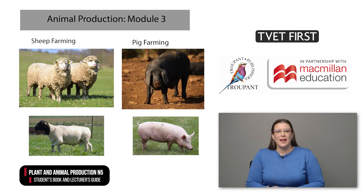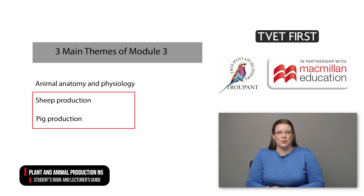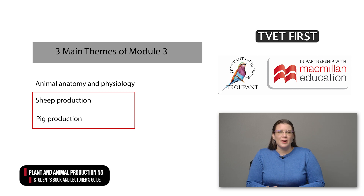The N5 course specifies sheep and pig farming. The final module, Module 3, has 44 learning objectives. The three main themes of Module 3 are animal anatomy and physiology, sheep production, and pig production. The curriculum covers sheep and pig production in particular detail.